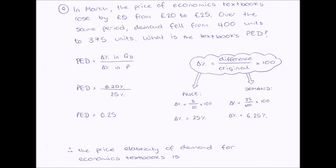Firstly, we need to know how to work out our percentage change in quantity demanded and price. We work out percentage change using the formula: percentage change equals the difference between the two numbers, divided by the original number, times 100.